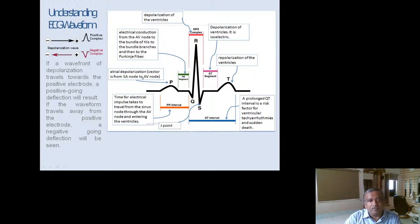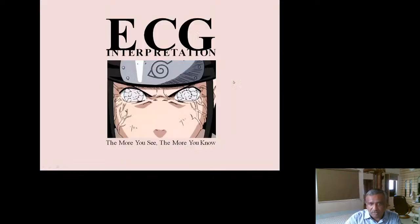Atrial depolarization produces the P wave, ventricular depolarization produces the QRS complex, and ventricular repolarization produces the T wave.